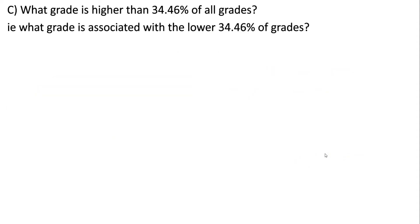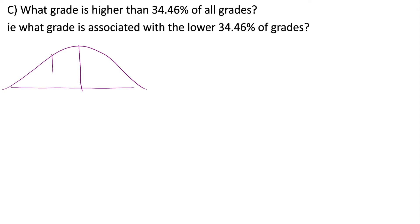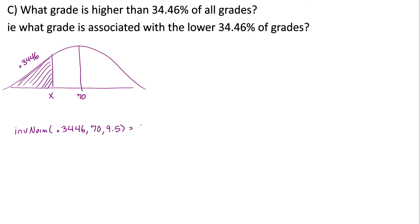Part C: what grade is higher than 34.46% of all grades, or what grade is associated with the lower 34.46% of grades? Drawing this picture: we want a grade higher than less than half of the grades, so we're dealing with a lower tail. Since they already gave us the area to the left, the calculator is easiest here — just inverse normal with area = 0.3446, mean = 70, standard deviation = 9.5 — giving 66.20. This makes sense because it falls below the mean.